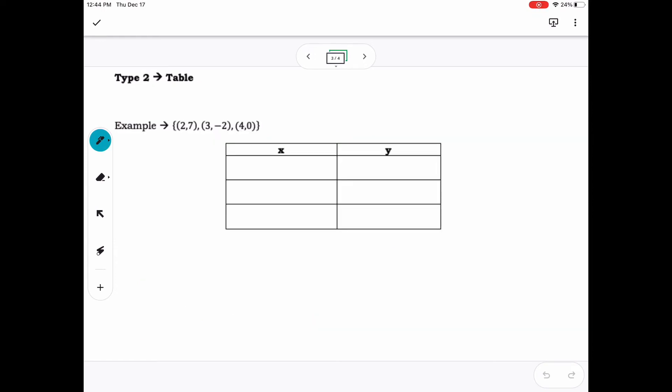Next, we can represent a relation using a table. Make a rectangular box with a line drawn vertically down the middle, then draw horizontal lines until you get the number of rows that is required for your given relation. In the first row, write x in the first column and y in the second column.